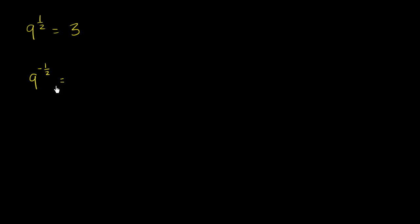Negative exponent means that this is just going to be 1 over 9 to the 1/2. That's what that negative is the cue for. This is 1 over 9 to the 1/2, and we know that 9 to the 1/2 is equal to 3. So this is just going to be equal to 1/3.